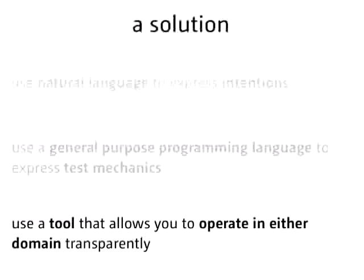As quoted from the book: being a first-class citizen of the codebase also means test code should be version controlled along with the production code. So you should be version controlling both your acceptance criteria and your test code along with production code. When you use natural language to express your intent and a general purpose programming language to express your mechanics, you need a tool that allows you to operate seamlessly in either domain. Tools like Cucumber, Gherkin, and SpecFlow for .NET allow you to do something similar.